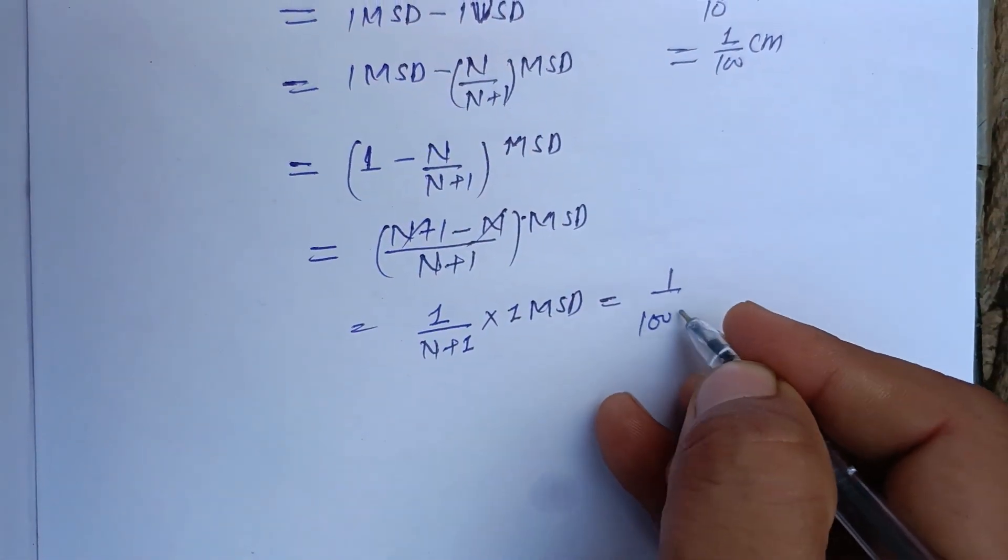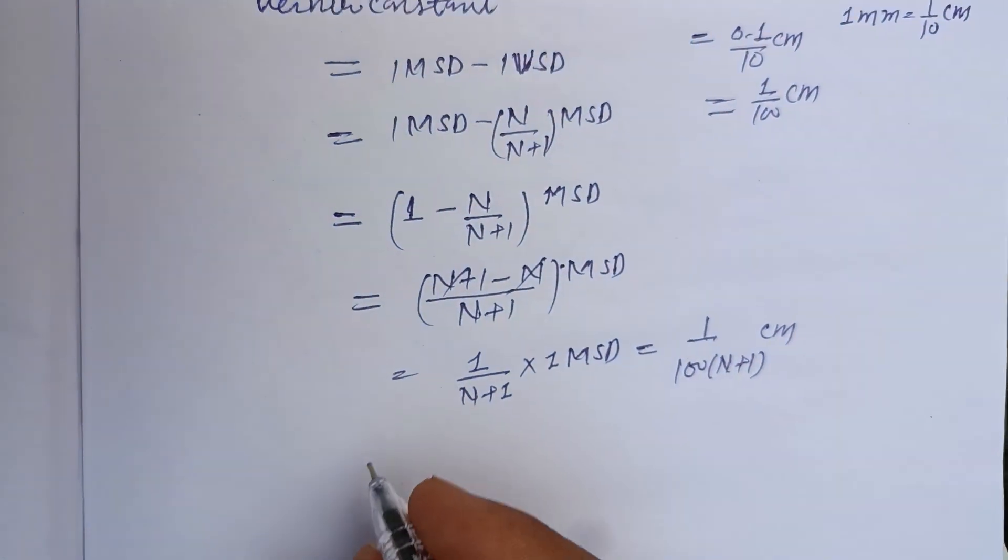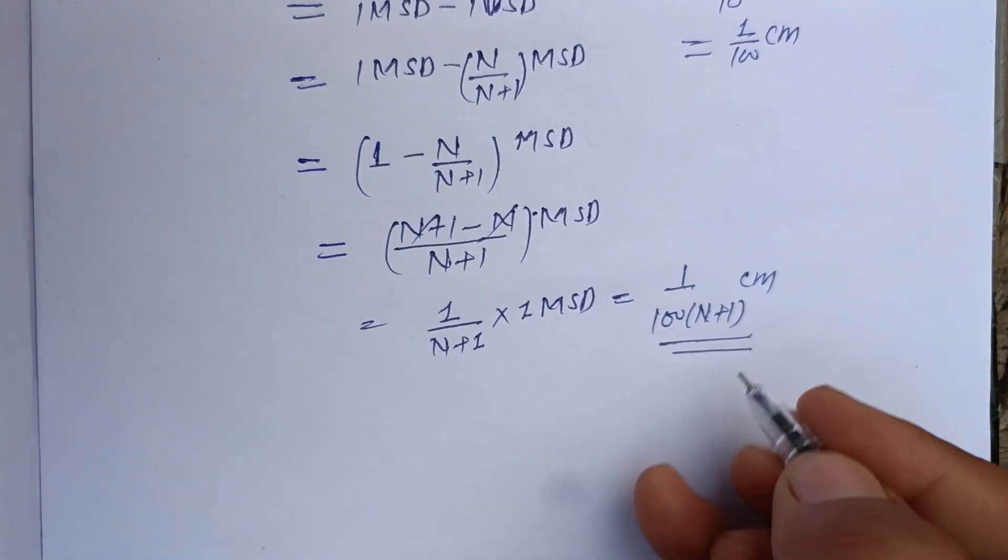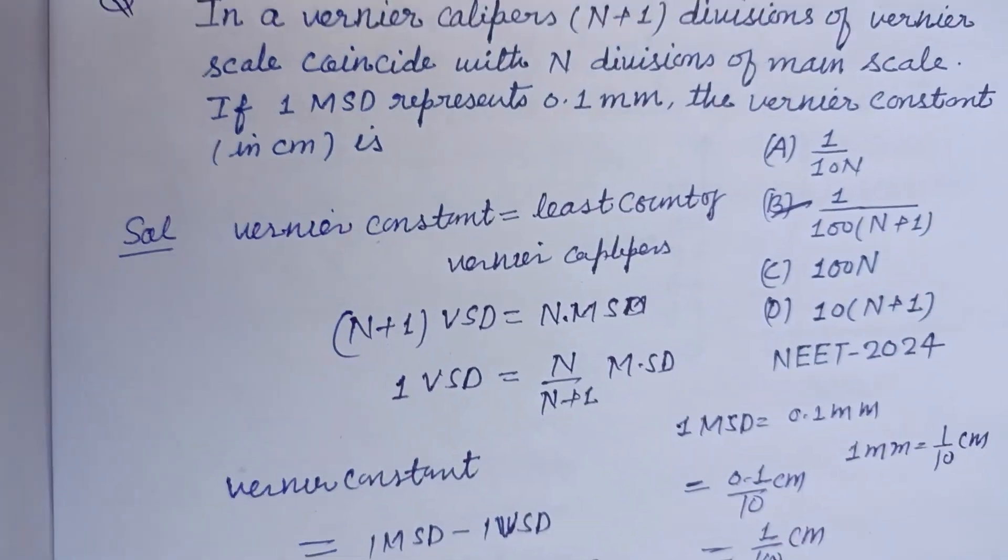So 1 upon 100 into N plus 1 cm is the Vernier constant of this question. So here answer is B. B is the correct answer.